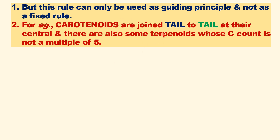What are the limitations of the Isoprene Rule? It is only used as a guiding principle, not a fixed rule. For example, carotenoids are terpenoids that have a tail-to-tail linkage at the central portion, which is an exception to the head-to-tail rule.